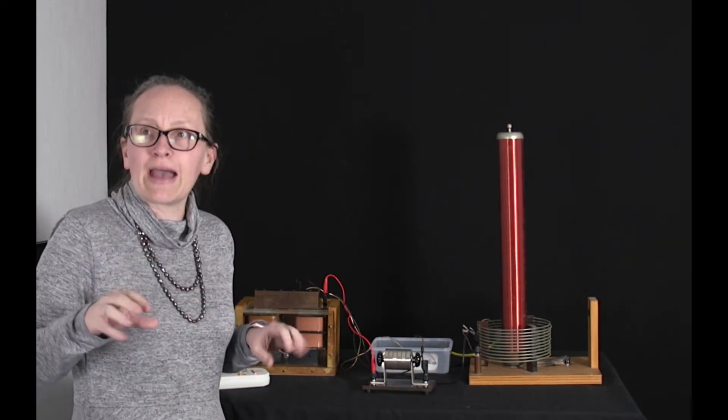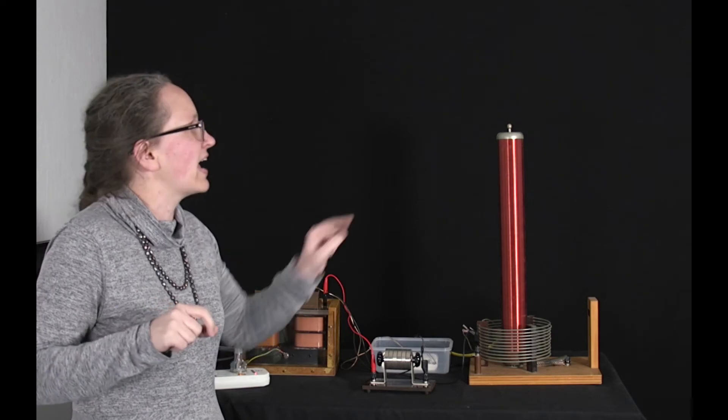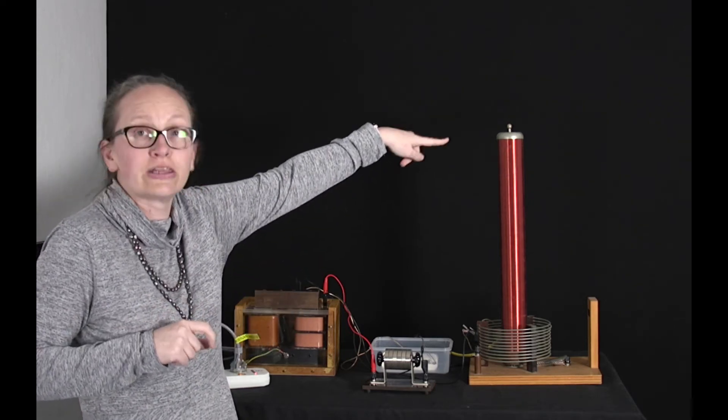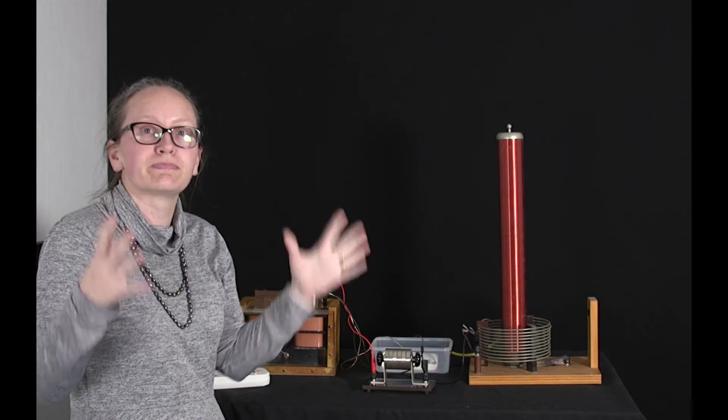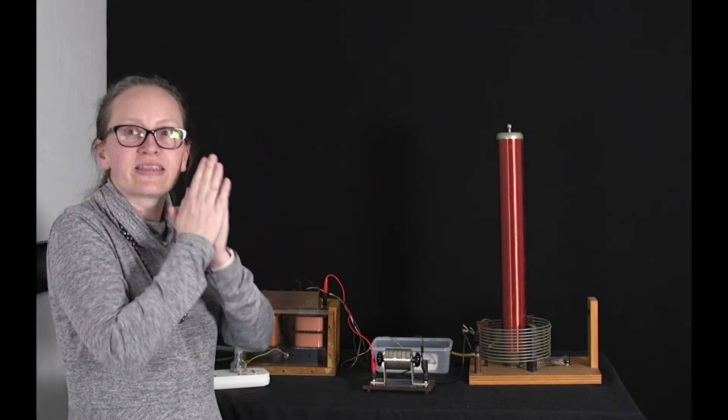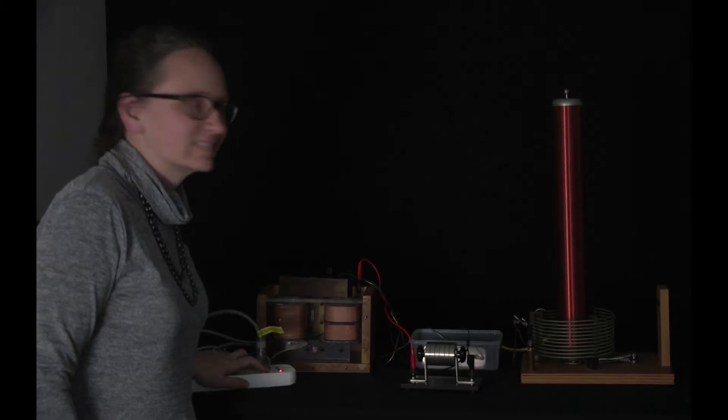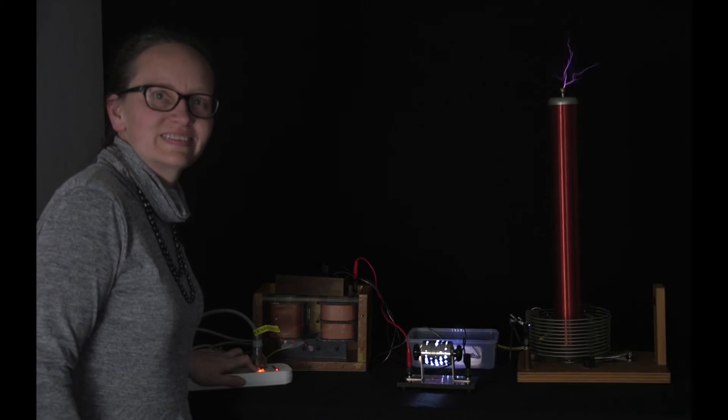So what's actually happening is that we're getting a really high voltage at a low current up here which is producing those beautiful purple sparks that we can see. And here it is in the dark so that we can see it even better.